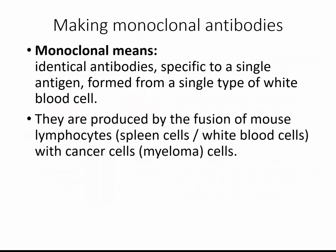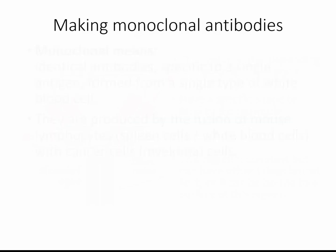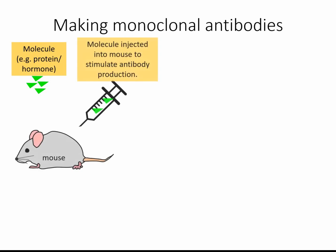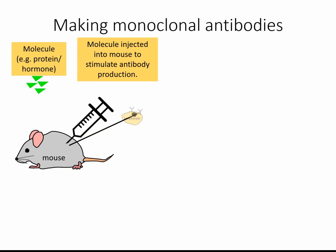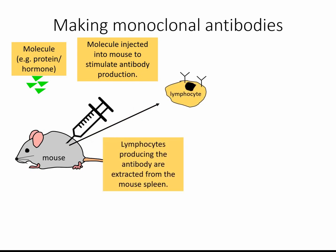We make monoclonal antibodies by exposing mice to the antigen, collecting their lymphocytes, and fusing them with cancer cells. We take the chemical we want to produce antibodies against — it might be a protein that a cancer cell produces, or a hormone we want to test for, or any kind of molecule. We inject it into a mouse, and the mouse will be stimulated to produce antibodies. We then collect those lymphocytes from the spleen of the mouse.